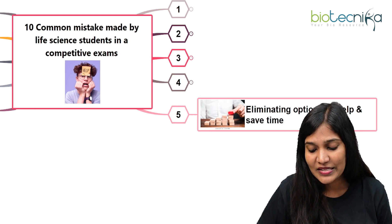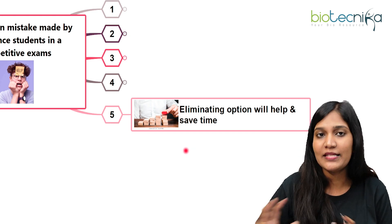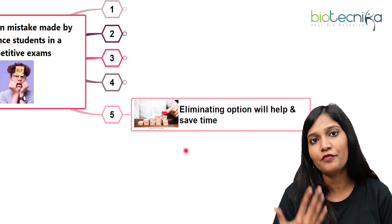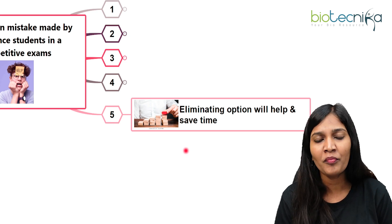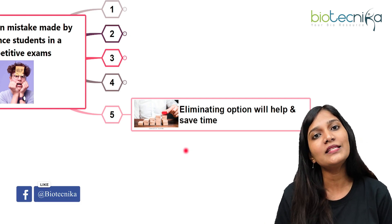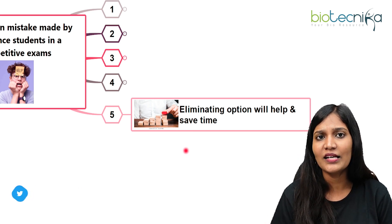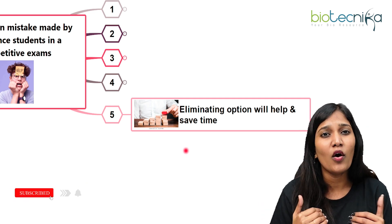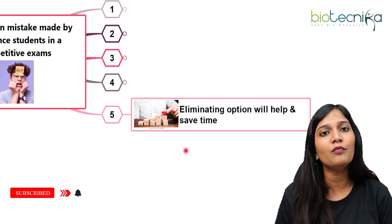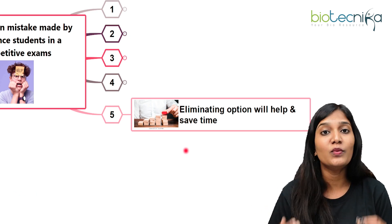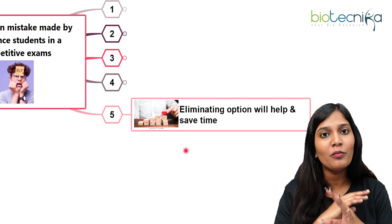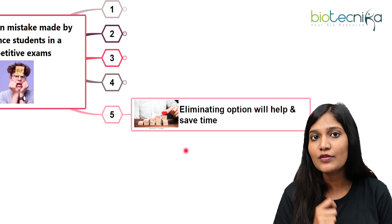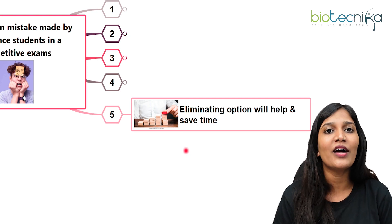The fifth common mistake is not using the elimination strategy to save time. There are two ways to answer a question: selecting the correct answer directly, or eliminating wrong options. For MCQs where you select one correct answer, if you think certain options are not applicable, eliminate those options. You'll end up with two or three remaining options. Eliminating options will definitely help save time, and it's a better strategic approach than hunting for the most correct answer.